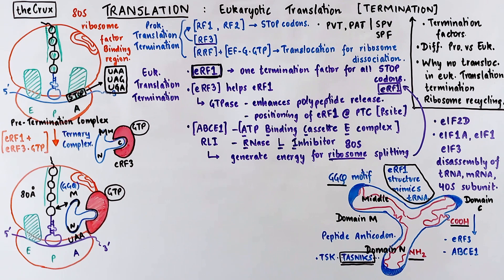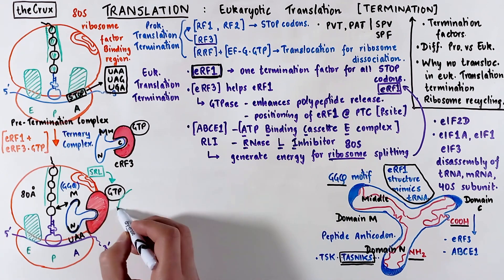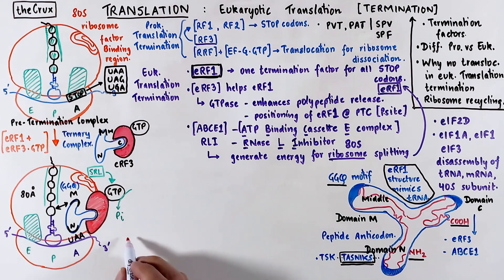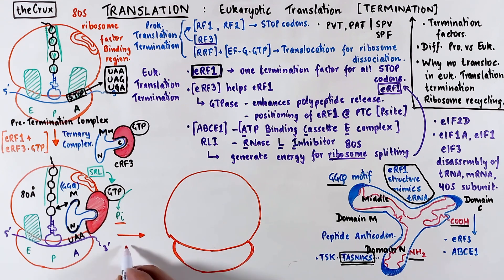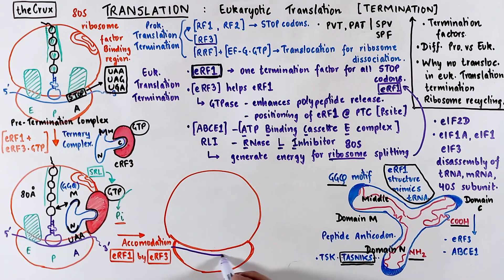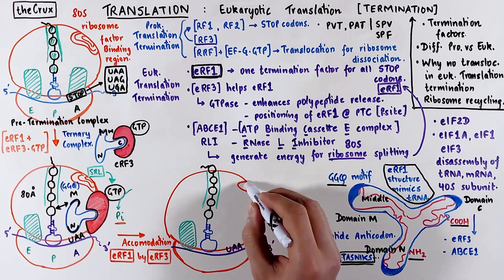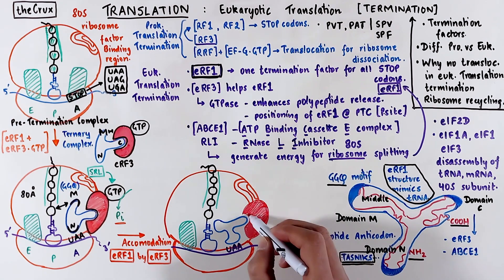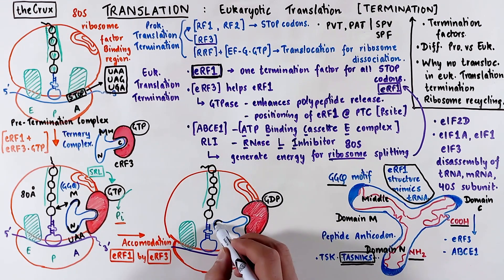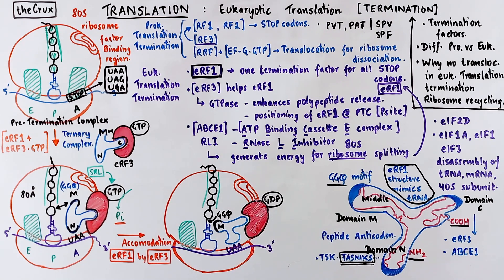After this ternary complex is bound, the SRL region in the factor binding region activates the GTPase of release factor 3, which releases the phosphate bond. Following this bond breaking, release factor 1 is properly accommodated by release factor 3, meaning that release factor 1 pairing with the stop codon becomes irreversible — it is now difficult for release factor 1 to dissociate away from the A site. As a result of this GTP reaction, domain M is moved into the peptidyl transferase reaction center at the P site, and now it is very closely sitting to the tRNA.